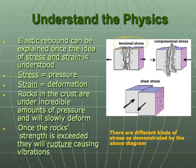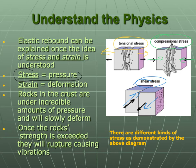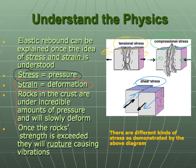Elastic rebound can occur regardless of whether you have tensional stress — that's pulling apart — compressional stress — that's pushing together — or shear stress, which is side to side. Solid materials can build up stress regardless of the motion. Stress is the buildup of pressure, and strain is the resulting deformation. Stress causes strain. The rocks in the crust are under incredible pressure and will slowly deform as forces drive their motion. Once the rock's strength is exceeded, they rupture, causing vibrations — those are the earthquake waves radiating out.